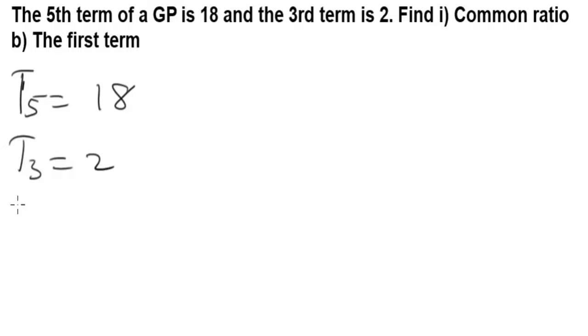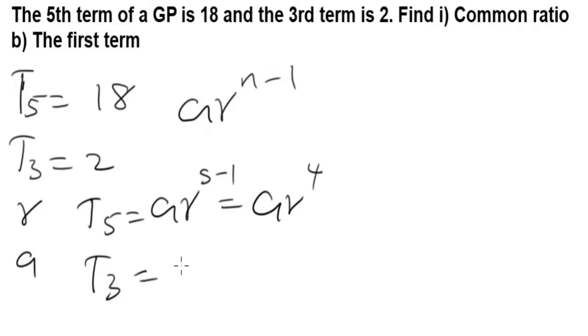We are looking for common ratio r and the first term a. The general formula for finding geometric sequence or geometric progression is ar^(n-1). So for T5 it's going to be ar^(5-1) which is ar^4, and T3 will be ar^(3-1) which is ar^2.